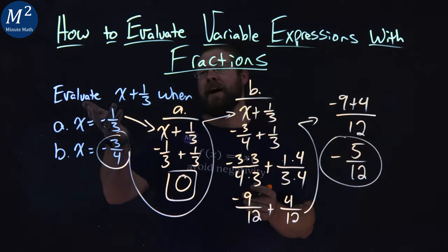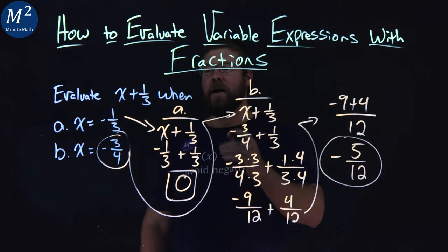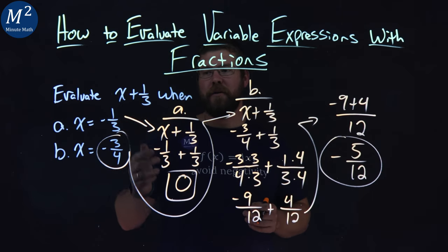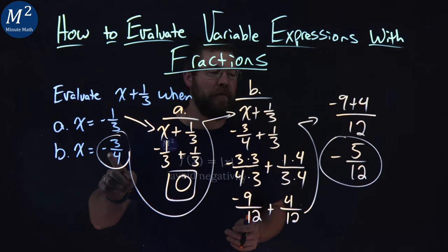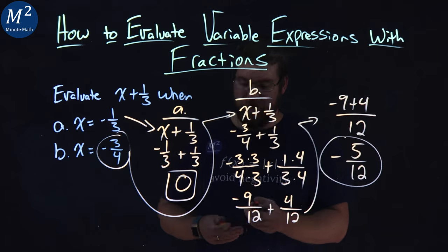We simplified, or we evaluated, x plus 1/3 when x equals negative 1/3, and we got 0, and when x is negative 3/4, we got negative 5/12.